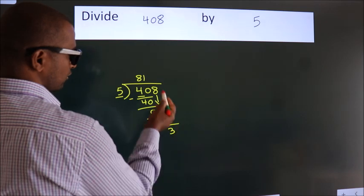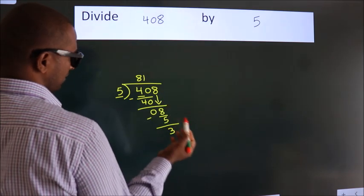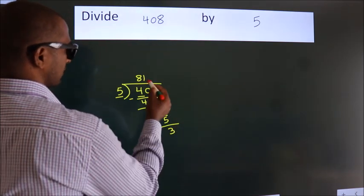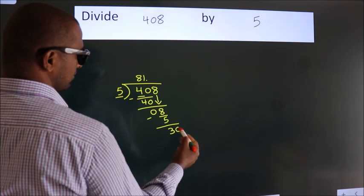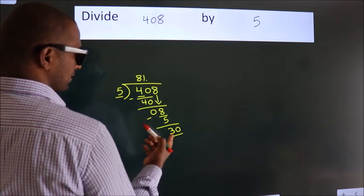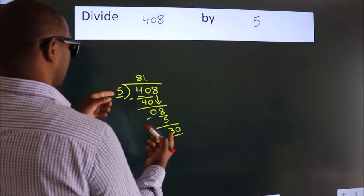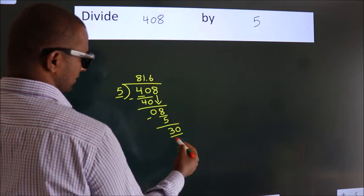After this, no more numbers to bring down. So what we do is put a dot and take 0. So, 30. When do we get 30 in the 5 table? 5 times 6 is 30.